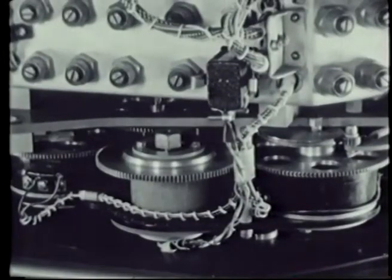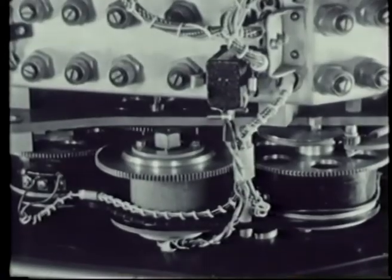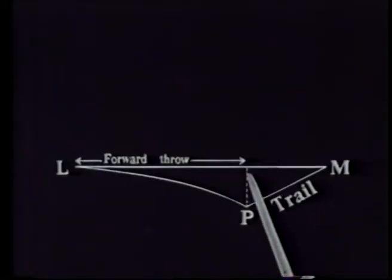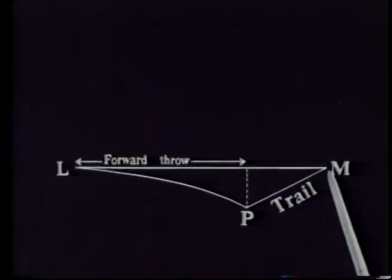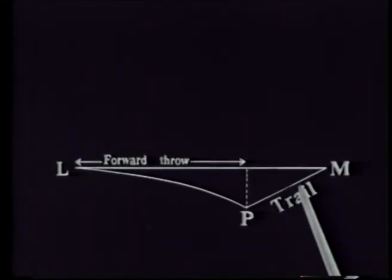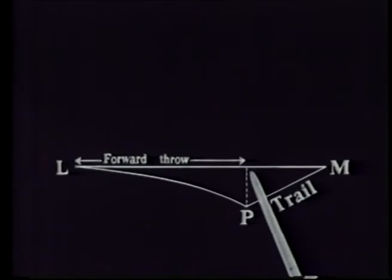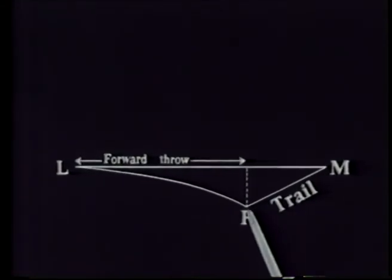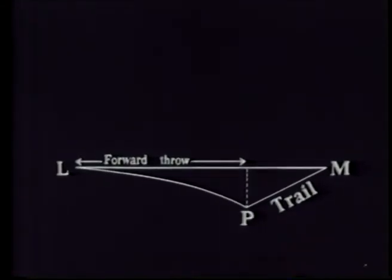A second potentiometer driven by the drift angle shaft is used to multiply track trail by the tangent of the drift angle and so give the cross component of trail.